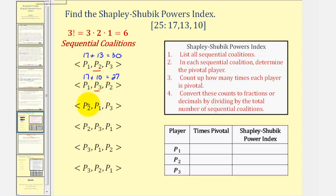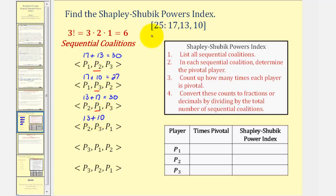For the next coalition with player two first at weight 13, plus player one at weight 17 — player one makes the sequential coalition meet the quota, so player one is pivotal. Next, in the order of player two, player three, player one: player two is 13 plus player three is 10, giving a weight of 23 — quota not yet met. It takes player one to join with a weight of 17 for the coalition to make quota at 40, so player one is pivotal for this order.